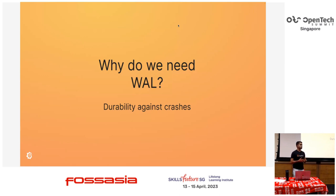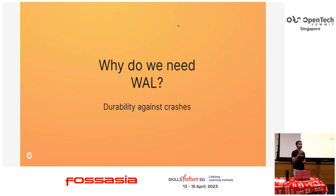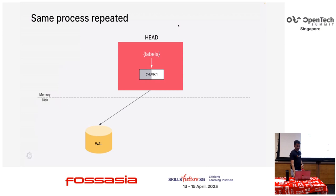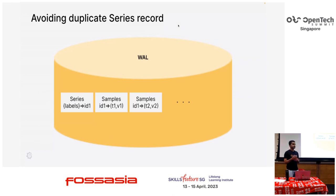We need the write-ahead log for durability. Just imagine you did a write request to the TSDB and the system crashed right now — you told the upper layer that this write was successful, but if the system crashes, all the data is in memory. How do you reproduce it back? We use the write-ahead log to replay the events as they happened and recreate the in-memory data structure we had before the crash or during restart. When we get another sample, we write it to the write-ahead log and then the chunk. Now we don't write a series record because we've already written one — we just say for ID 1, we got another sample.